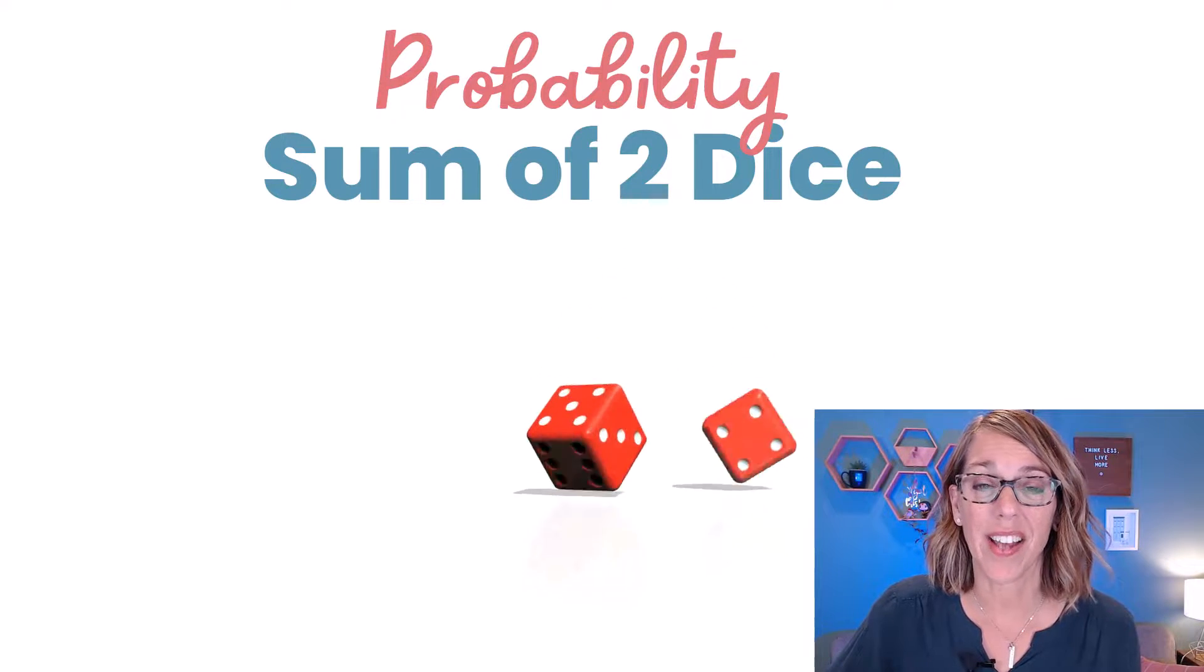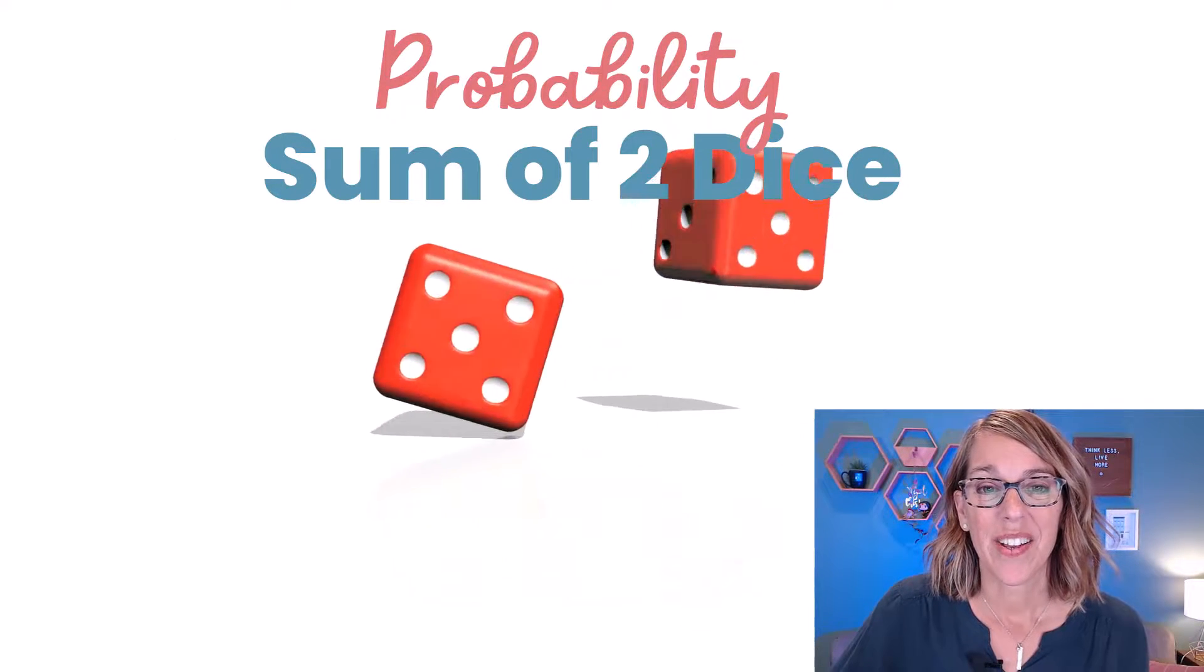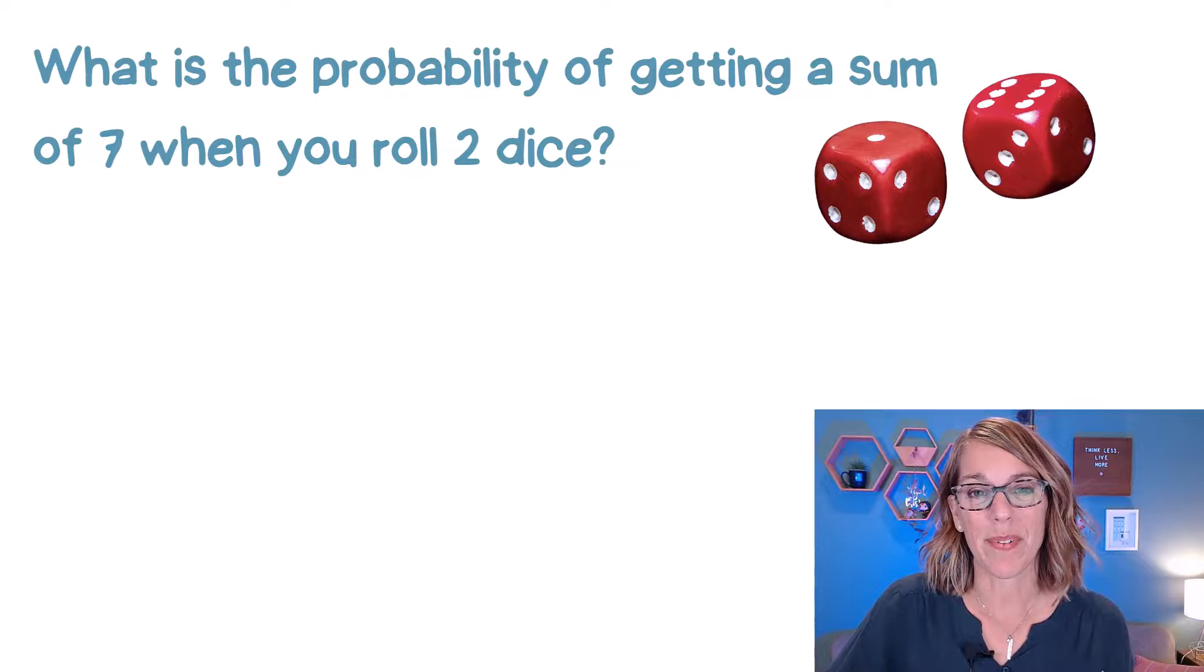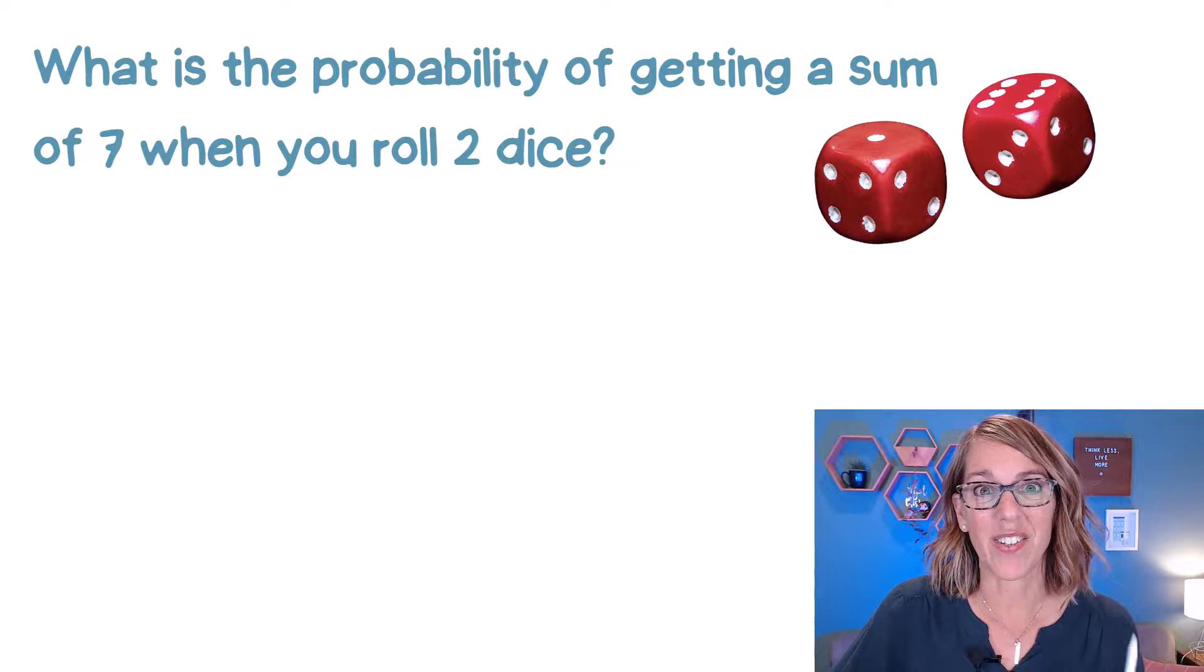Let's find the probability for a sum of two dice. We're going to be looking at this example where we're looking for the probability that two dice sum to seven.